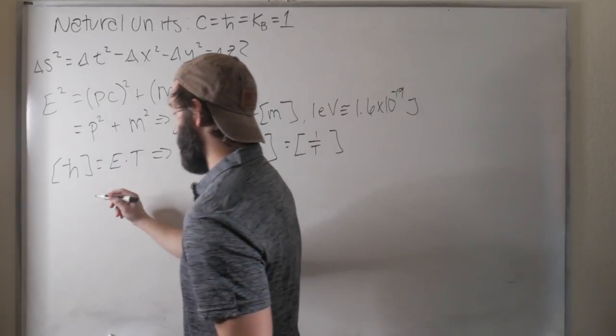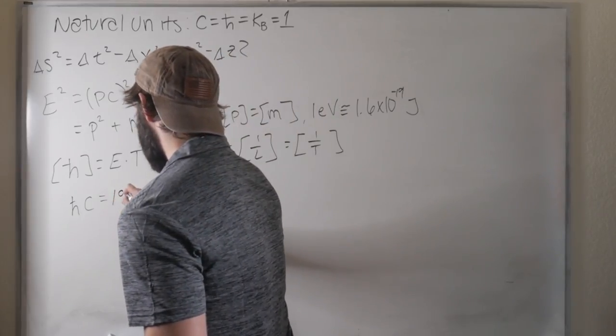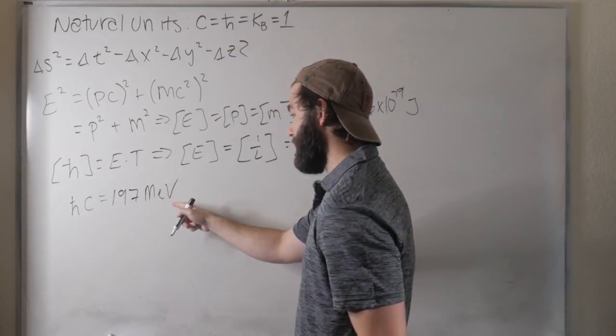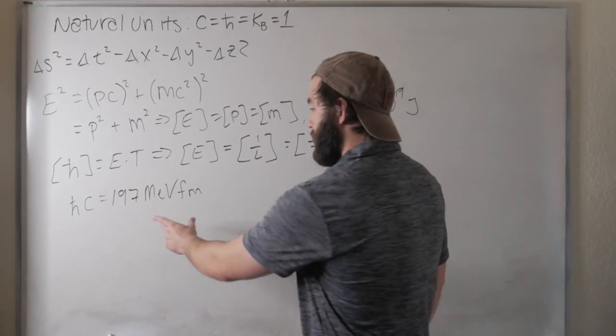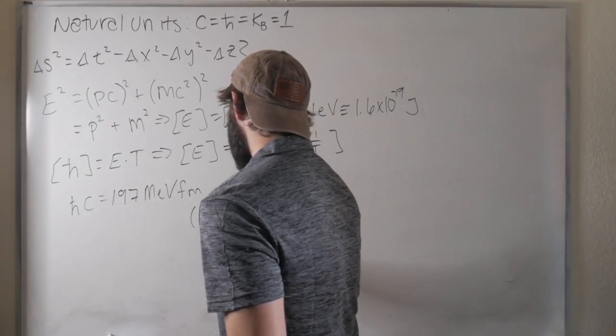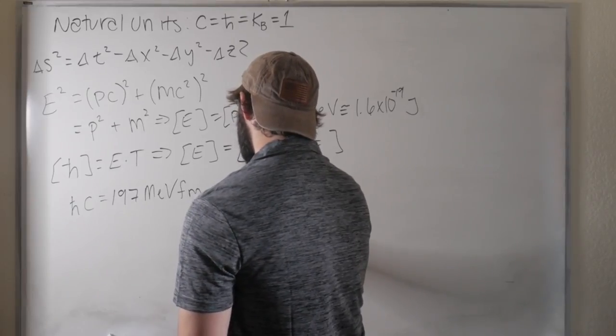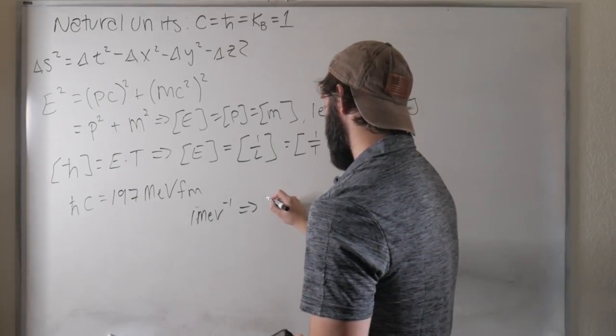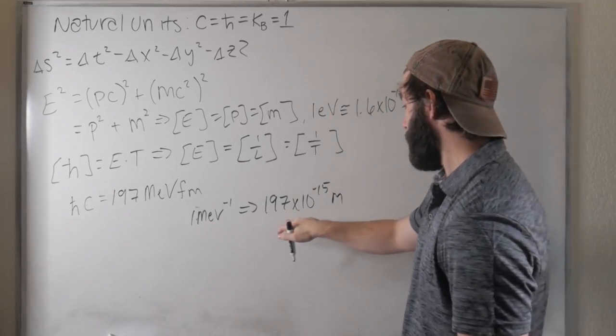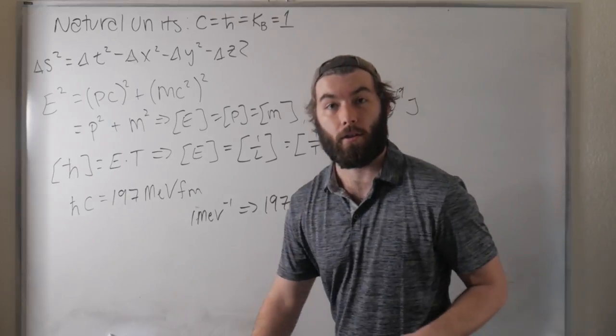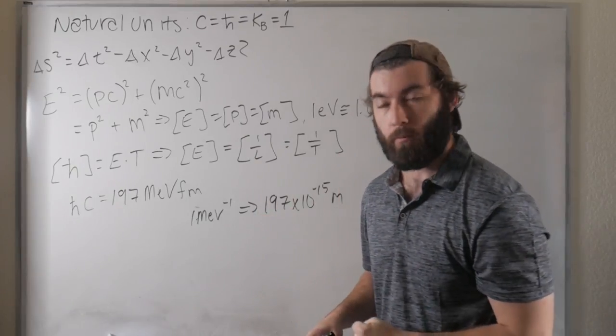However, one trick that my high energy physics professor taught us was that h-bar times the speed of light is actually a pretty easy one to remember. It's about 197 mega electron volts, so that's 10 to the 6 electron volts, times a Fermi. And a Fermi is 10 to the minus 15 meters. So what this tells us is that if I have one inverse, one MeV inverse, that corresponds to a size scale of about 197 fermis, times 10 to the minus 15 meters. So one MeV can correspond to about a size scale of about 10 to the minus 13 meters. So this isn't, yes, though we're redefining our physical quantities, this isn't just hand wavy. There's still some tangibility to it all, which is pretty cool.